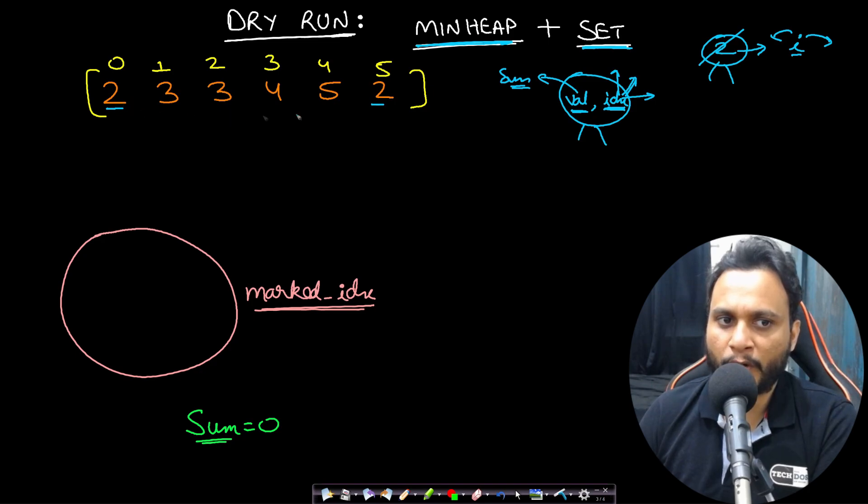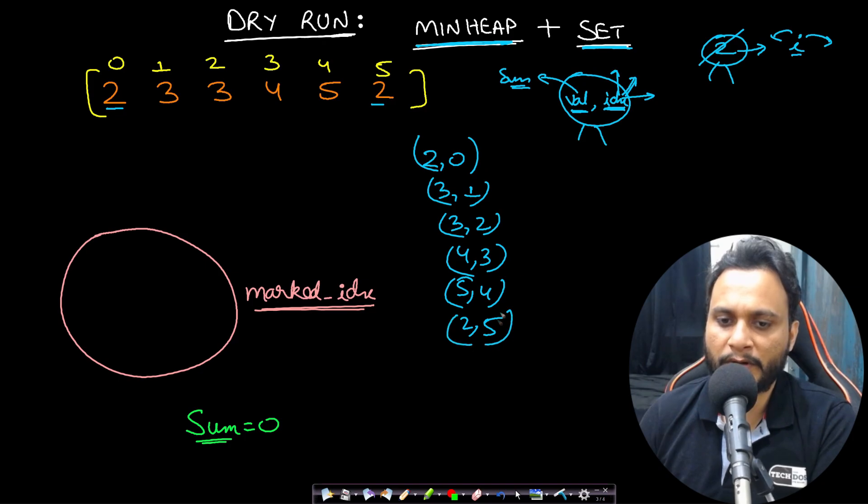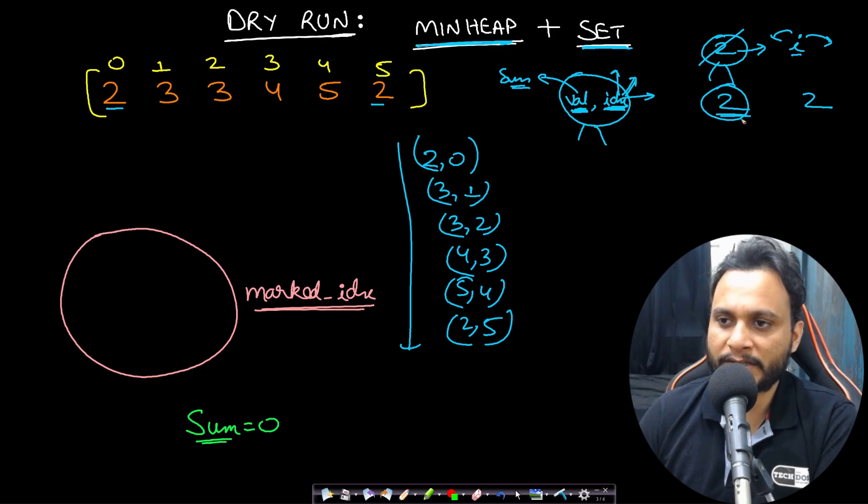First of all, I will be pushing all these items into the heap. So what all will be the entries? I will be entering 2, 0, 3, 1, 3, 2, 4, 3, 5, 4 and 2, 5. So these will all be the heap elements. Now, this is a min heap. So the value will be by default sorted by the first item, which is value. And if two items have the same value, then it will be sorted using index. And that is what the problem also expects. That if you have two twos, then the one on the left side having a lower index should be the one which is picked. And this heap, the min heap will maintain it by default. You don't have to write any comparator.